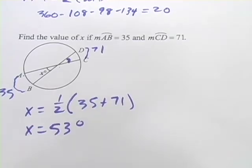So half of that is 53 degrees. That's how to figure out the angle there of two intersecting chords.